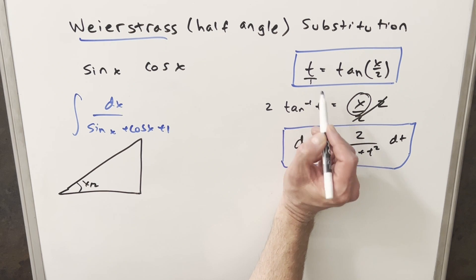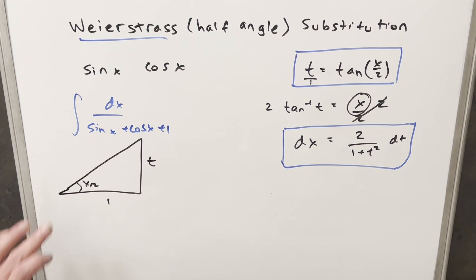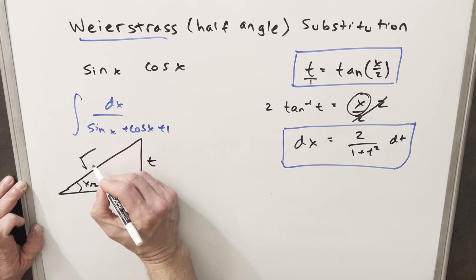And for t, I can write this as t over 1. So tan of x over 2 is just going to be opposite over adjacent or t over 1. Then using the Pythagorean theorem on this, we can find our hypotenuse to just be square root of 1 plus t squared.